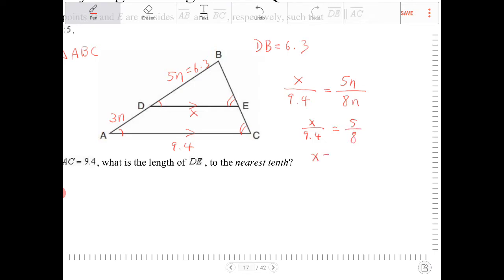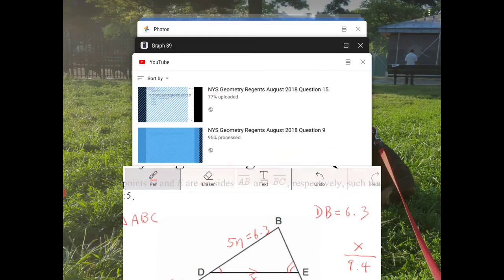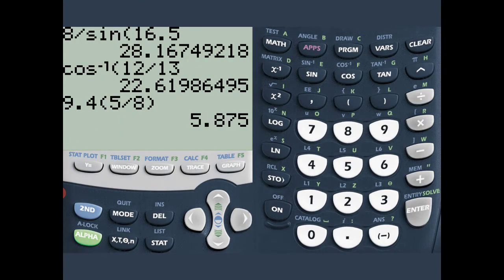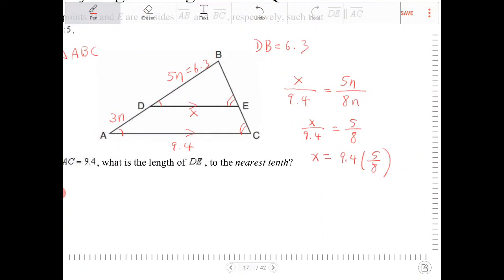Or I can say X is equal to 9.4 times 5 eighths. And let's see what that is. This is going to give me 5.9, roughly, because it says round to the nearest tenth. So, X is approximately 5.9.